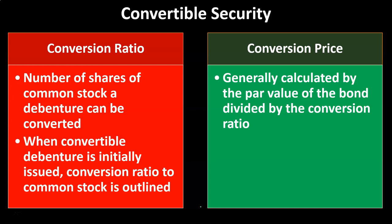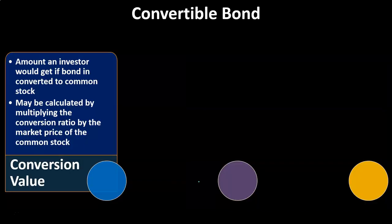The conversion price is generally calculated by the par value of the bond divided by the conversion ratio — so we're using par value, not market value, to get to the conversion price. We also have the conversion value, which is the amount an investor would get if the bond is converted to common stock. That's one of the basic formats we'll use to value these convertible bonds: imagining the conversion is exercised, then multiplying the conversion ratio by the market price of the common stock, since we know that price because shares are trading on the market.